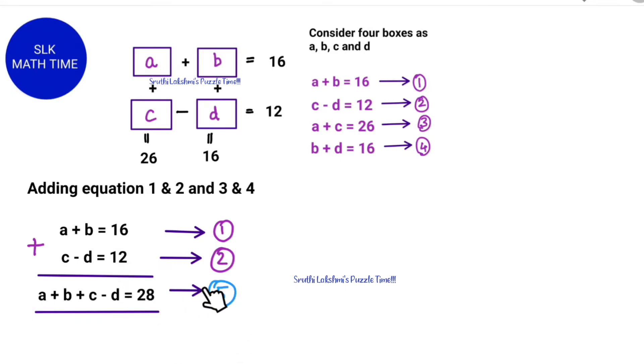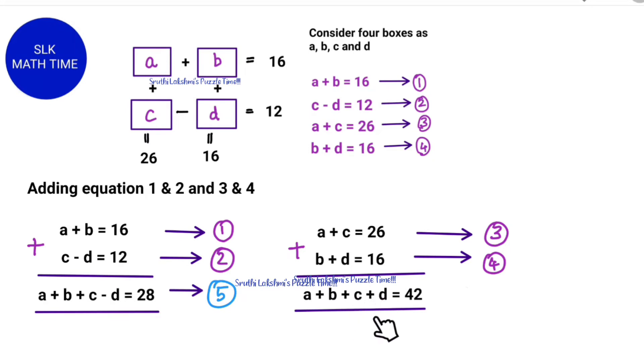Now let's add equations 3 and 4. We do A plus C plus B plus D which equals 42. This equation here is equation number 6.